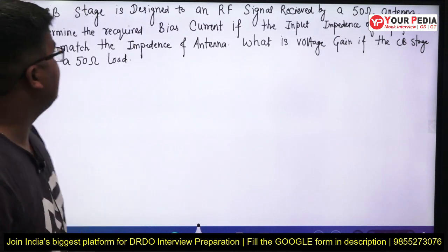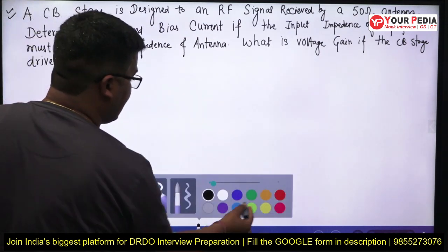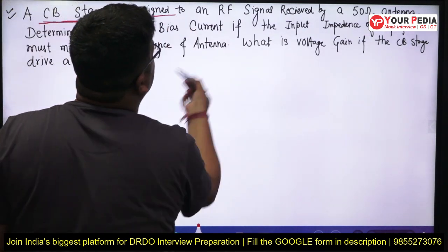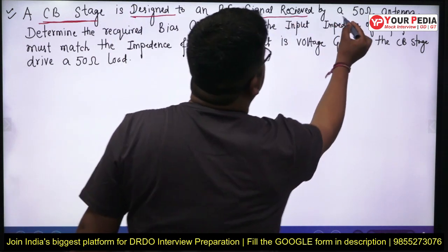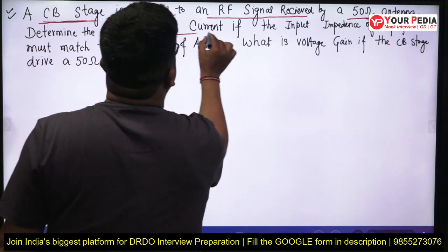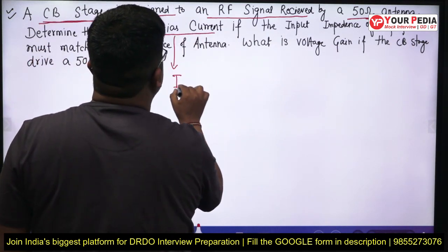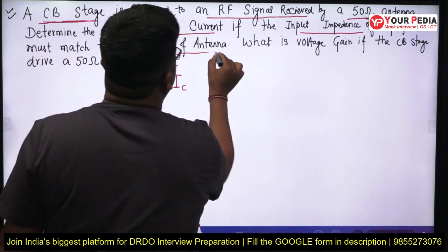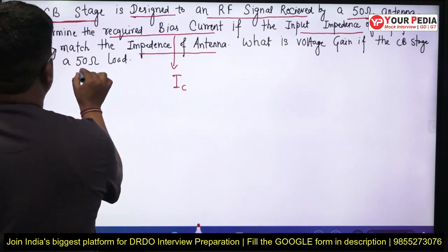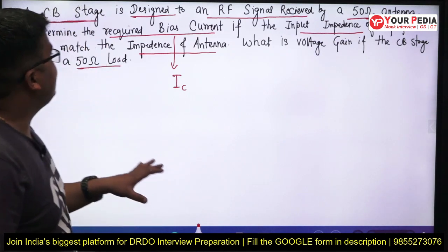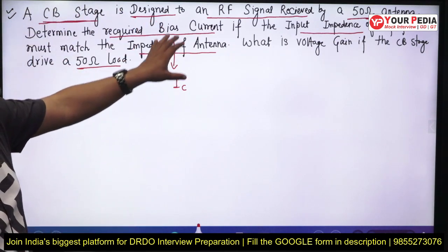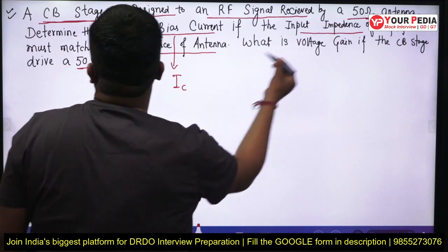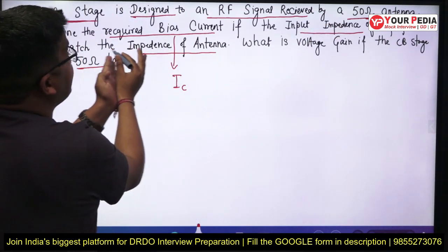Here is one actual interview question. They gave a common base stage designed to receive an RF signal from a 50 ohm antenna. The question was: determine the required bias current IC. The condition is that the input impedance of the common base amplifier must match the impedance of the antenna. Then they also ask: what is the voltage gain of the common base stage driving a 50 ohm load?